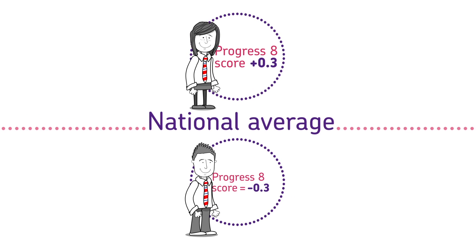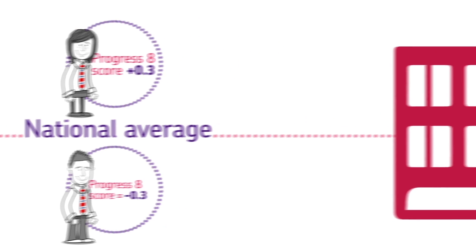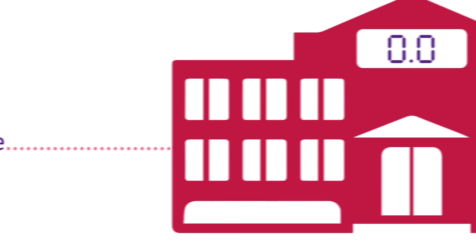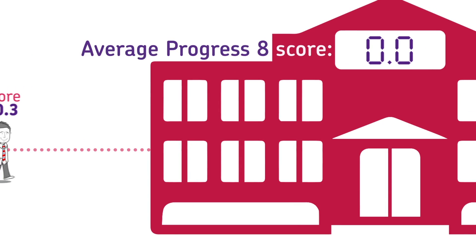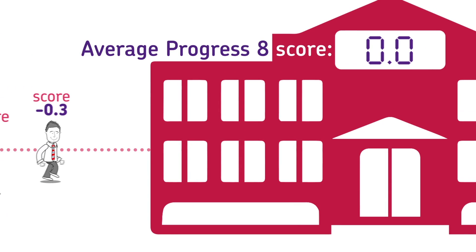A positive Progress 8 score shows that students have performed better than average, and a negative score shows that they have performed below average compared to students with the same prior attainment.